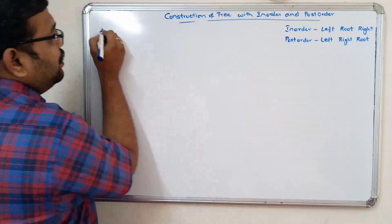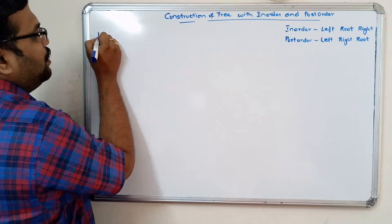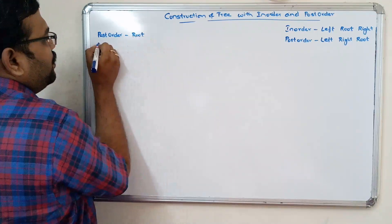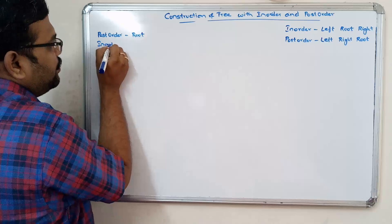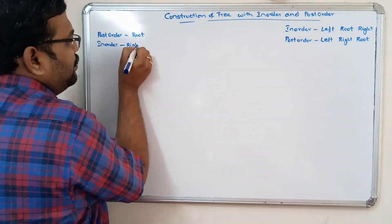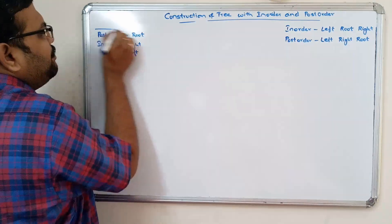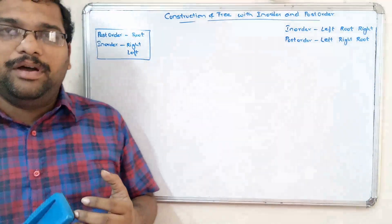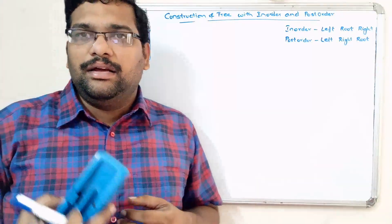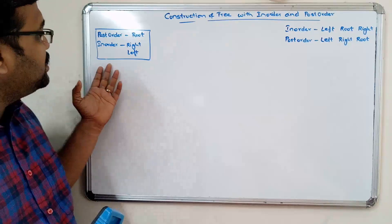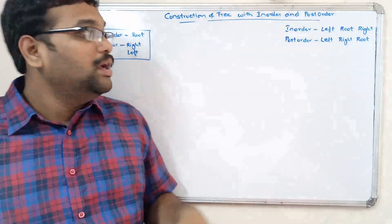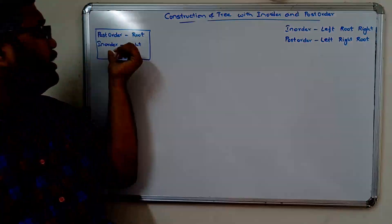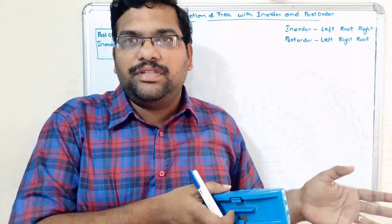From the postorder we will find the root node, and from the inorder we will find the right child and left child. The same thing we will follow. In the previous session, from the preorder we got the root node, and from the inorder we got the right and left child. Here also the same — but from the postorder we find the root node, since the last element in postorder is always the root. Then from the inorder we can know what is the left child and what is the right child.